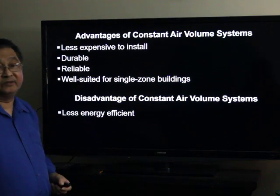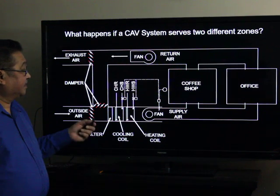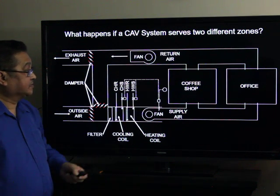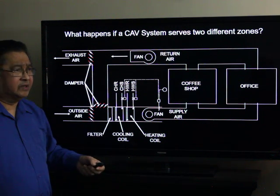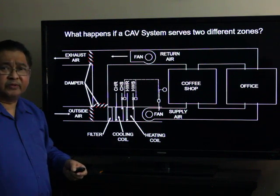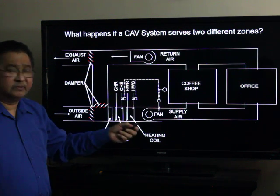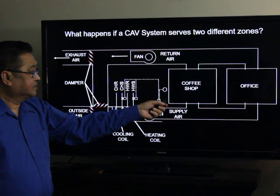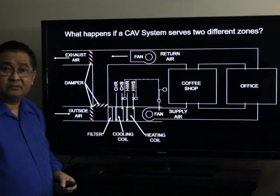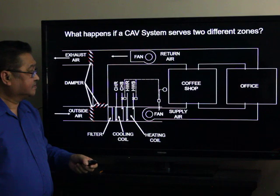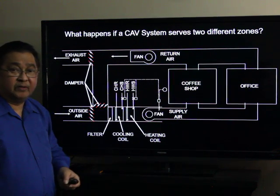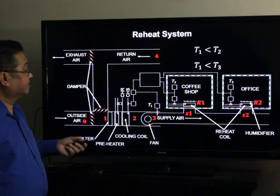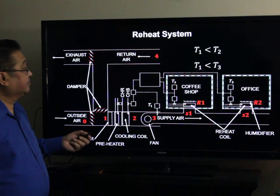Disadvantages: it is less energy efficient. What happens if it serves two different zones? You have the supply air serving two different zones — a coffee shop and an office. For example, at 6:30 in the evening, the office is already closed but there are two employees working overtime. The coffee shop is at peak hours with lots of people, so we need more cooling in the coffee shop and less cooling in the office. You will experience discomfort in the coffee shop because it's too hot. You cannot just adjust the temperature setting because increasing it will make the office too cold. That's why there is a modification of the constant air volume system, which is a reheat system.